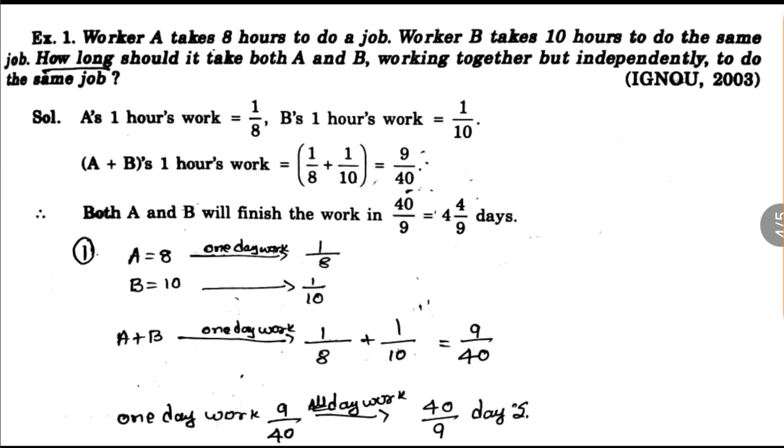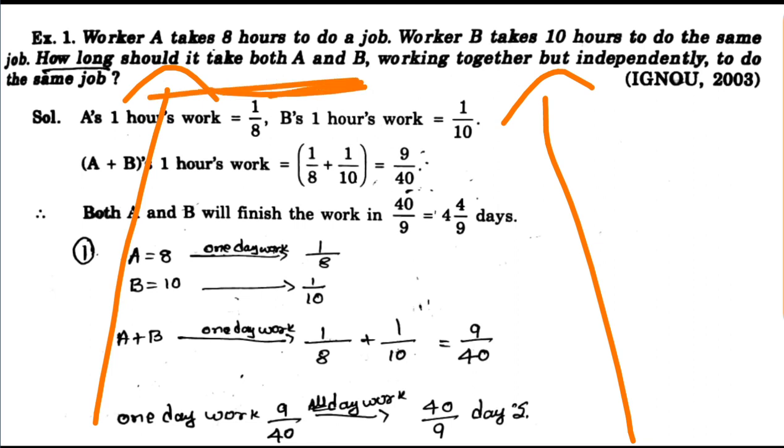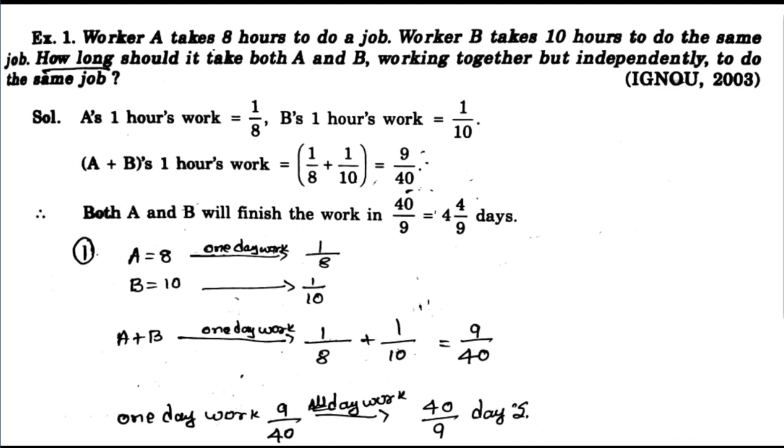So we will see the first method. Worker A takes 8 hours to do a job. Worker B takes 10 hours to do the same job. Now we will see how long will it take both A and B working together, but independently, to complete the same job.